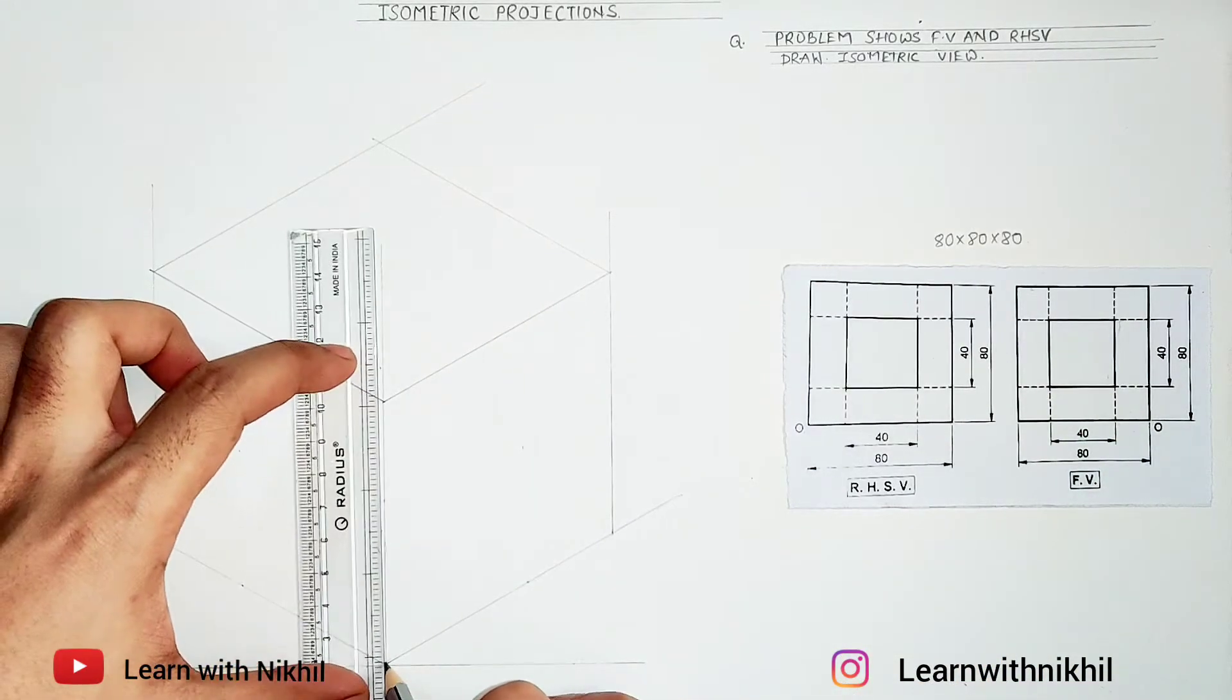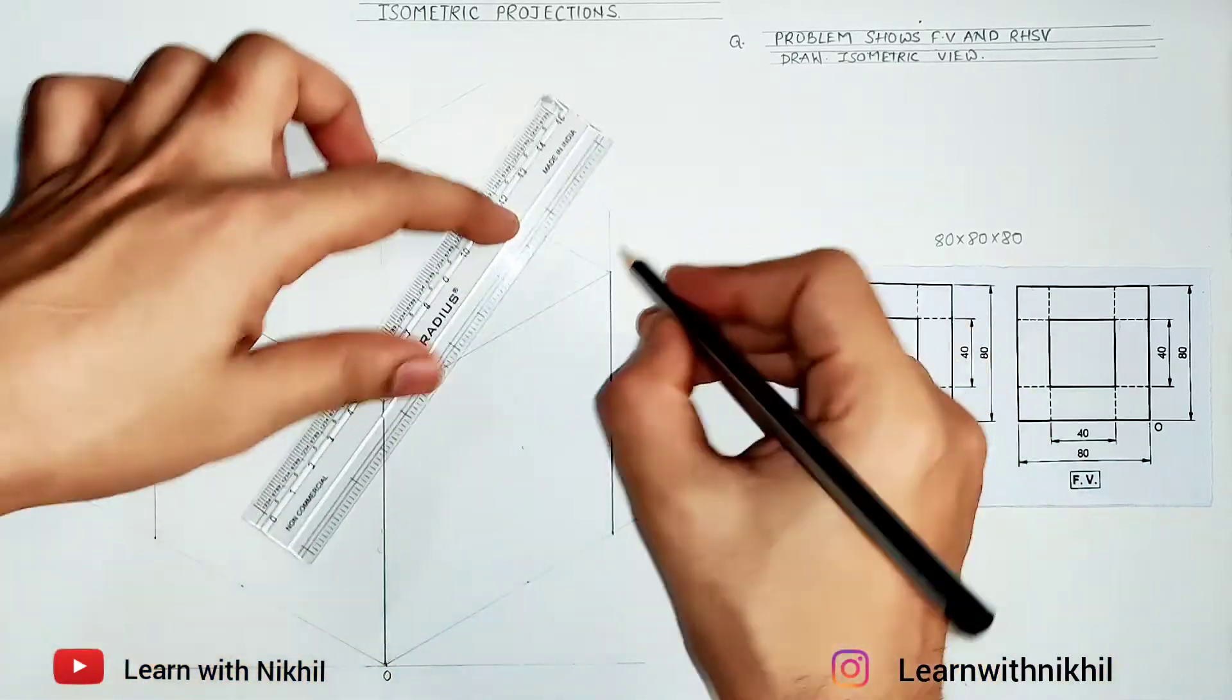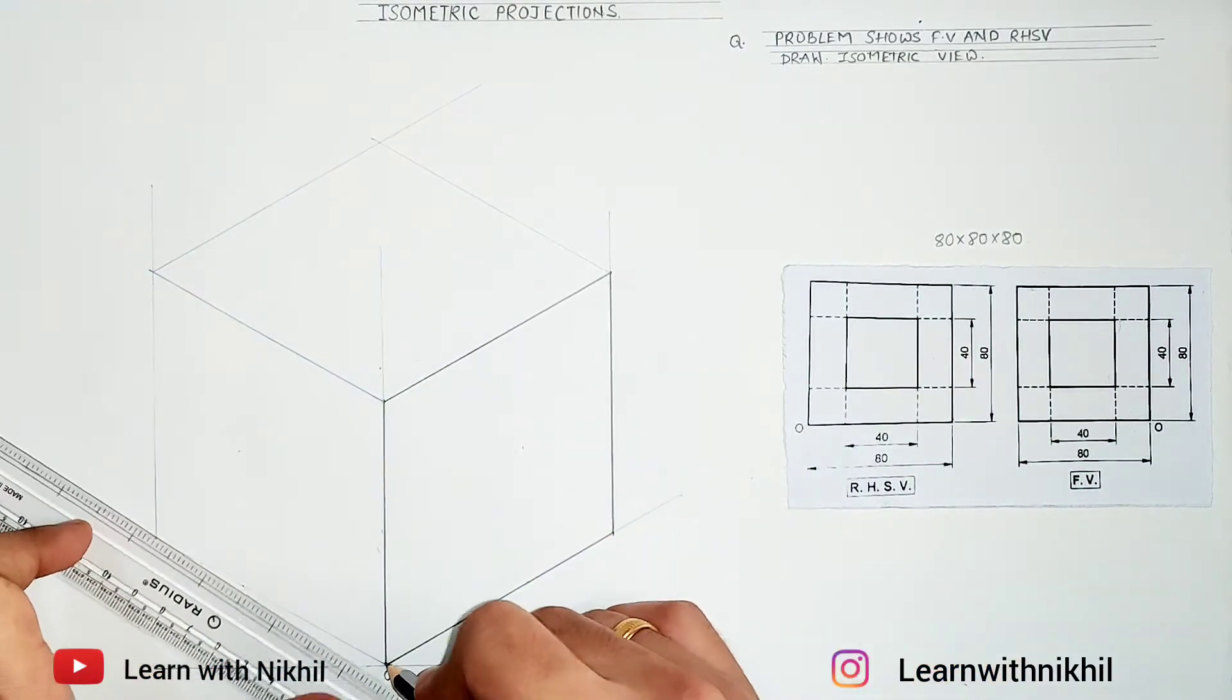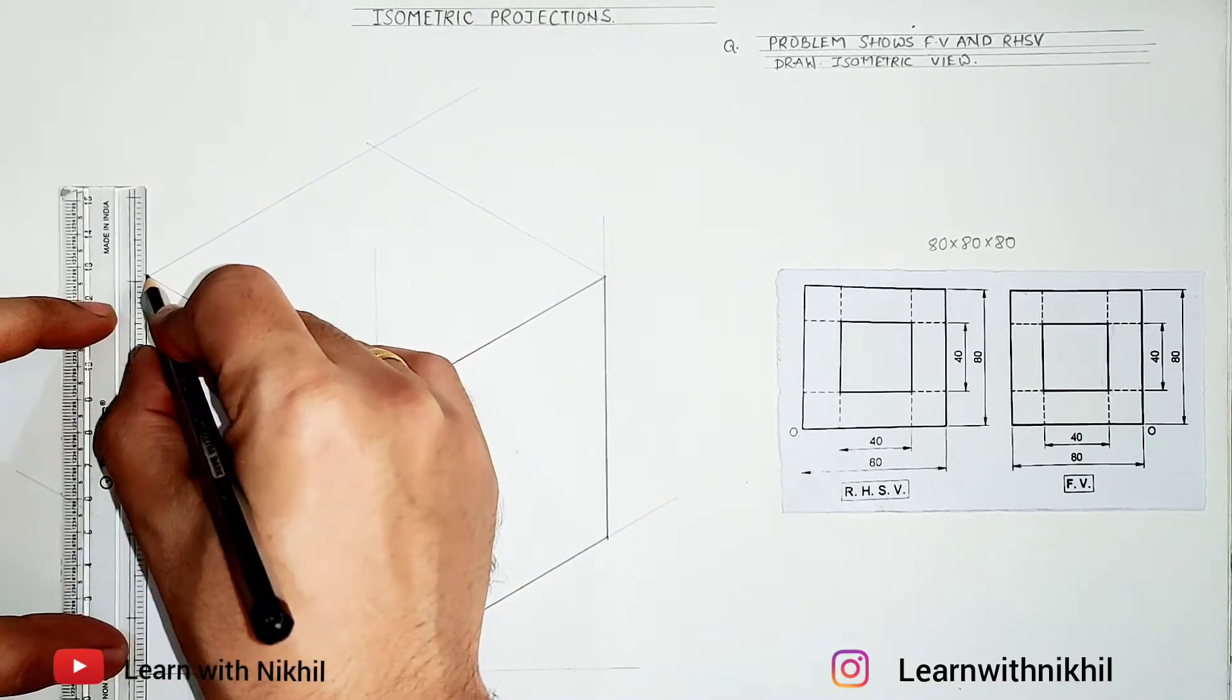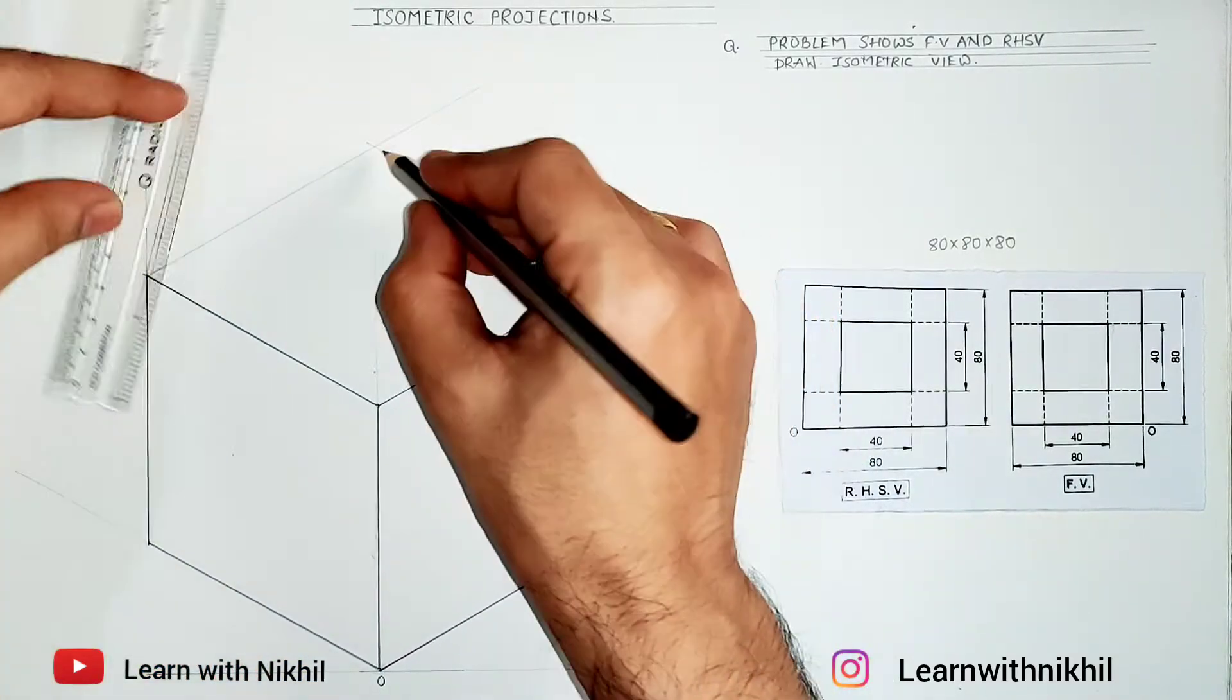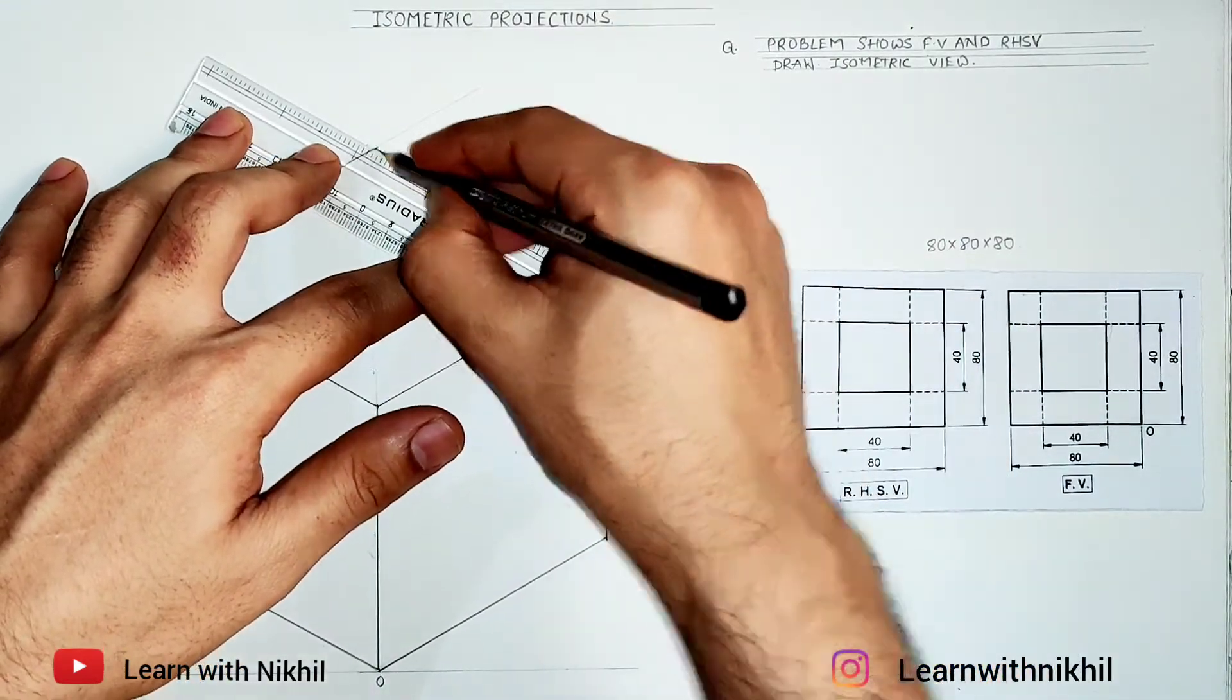Now first I'll just make all these lines dark. As in the question also, front view you have a square. So this is the right-hand side view—all the sides are dark. This is the front view—all the sides dark. Same like front and right-hand side view, the top view also will be dark.